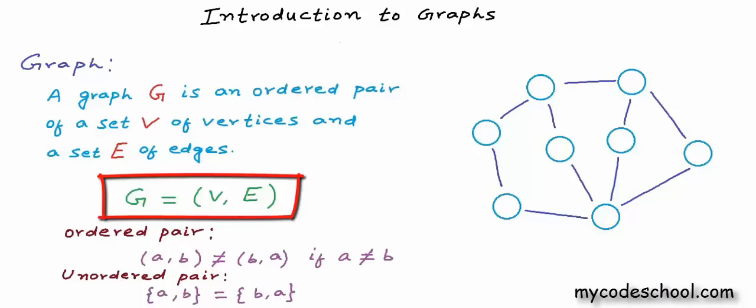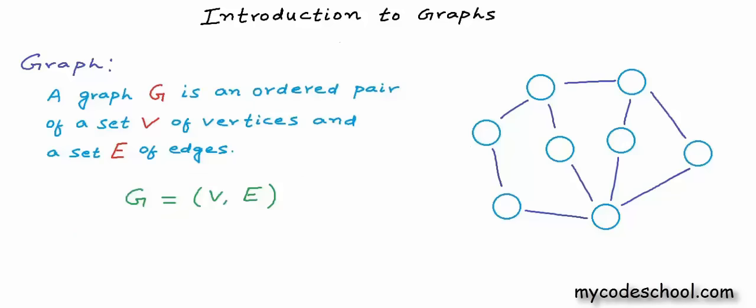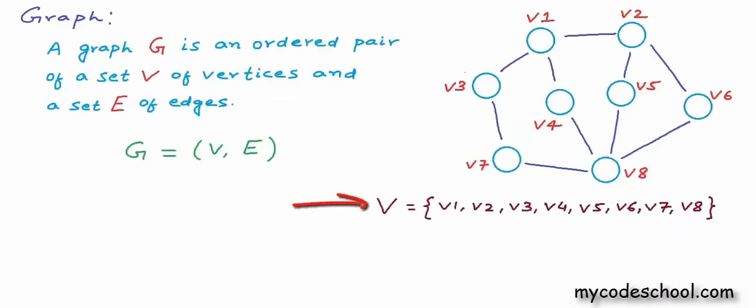I have a graph drawn here on the right. This graph has 8 vertices and 10 edges. I want to give names to these vertices because each node in a graph must have some identification — it can be a name or it can be an index. I am naming these vertices V1, V2, V3, V4, V5 and so on. This naming is not indicative of any order; there is no first, second or third node here. I could give any name to any node. So my set of vertices here has 8 elements: V1, V2, V3, V4, V5, V6, V7 and V8.